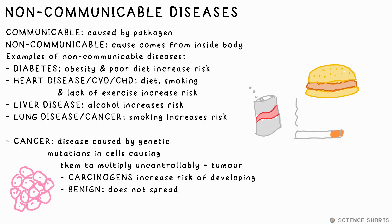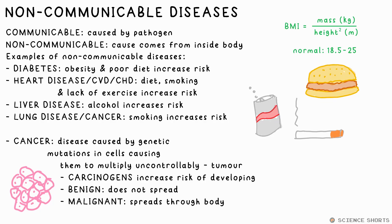Benign tumours don't spread through the body and are relatively easy to treat. However, malignant tumours are when these cancerous cells spread through the body — much worse. BMI stands for body mass index. It's an indication of how healthy a person's weight is relative to their height. Whatever number you end up with will put you into bands that determine if you're underweight, a healthy weight, overweight, or obese.